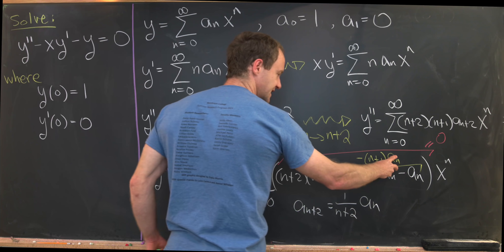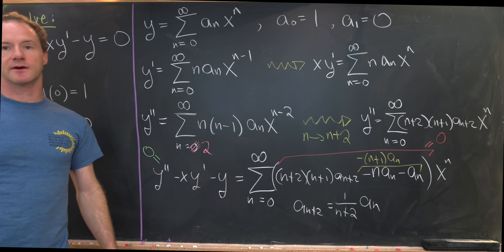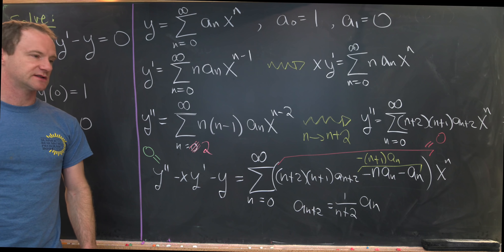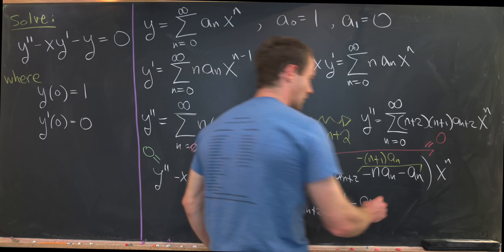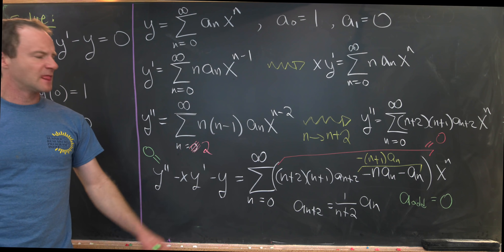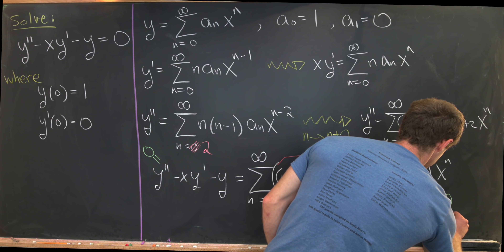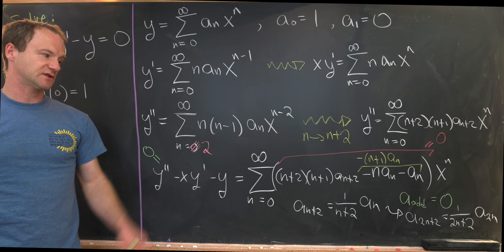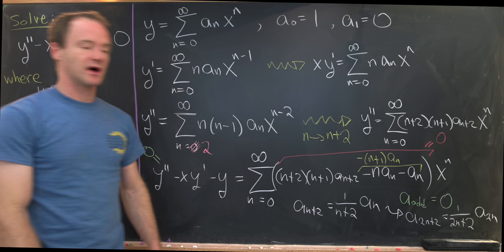So a₂ equals one half times a₀, a₃ equals one third times a₁, and so on. But recall that a₁ is zero, which tells us that all odd-indexed coefficients are zero. We only need to look at the even terms. Re-indexing by replacing n with 2n, we see that a_{2n+2} equals 1 over (2n+2) times a_{2n}, which is a one-step recursion since 2n+2 equals two times (n+1).